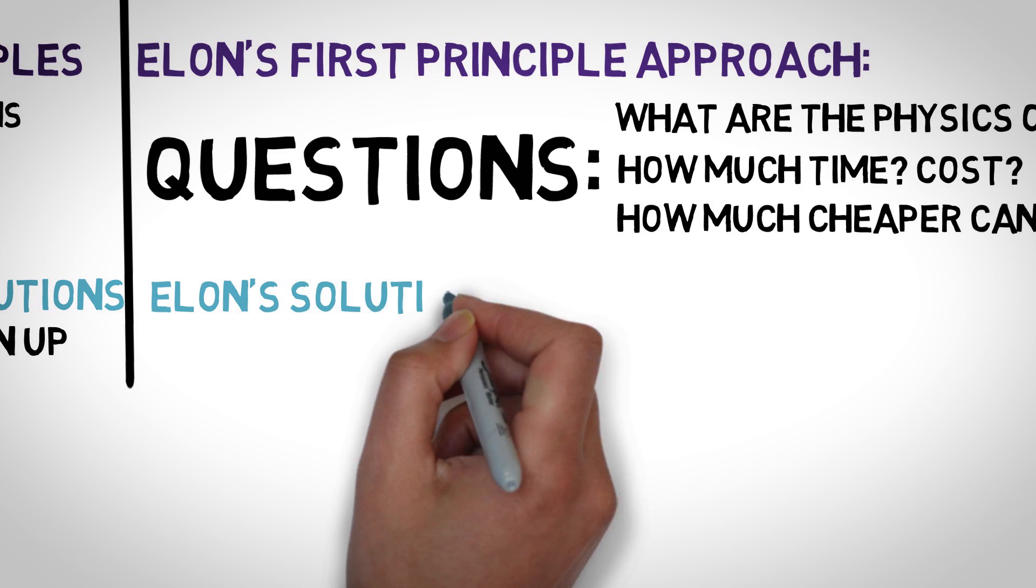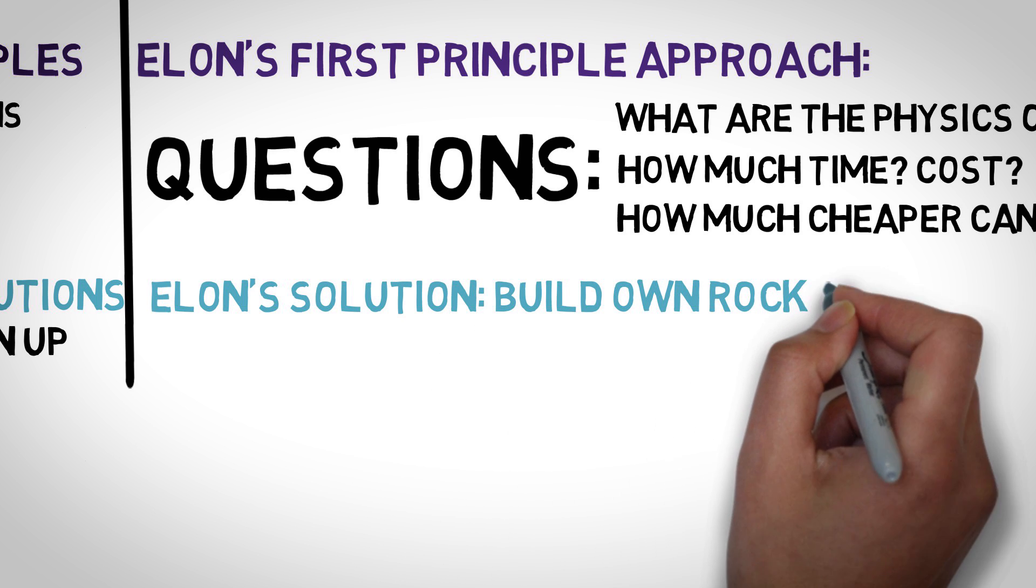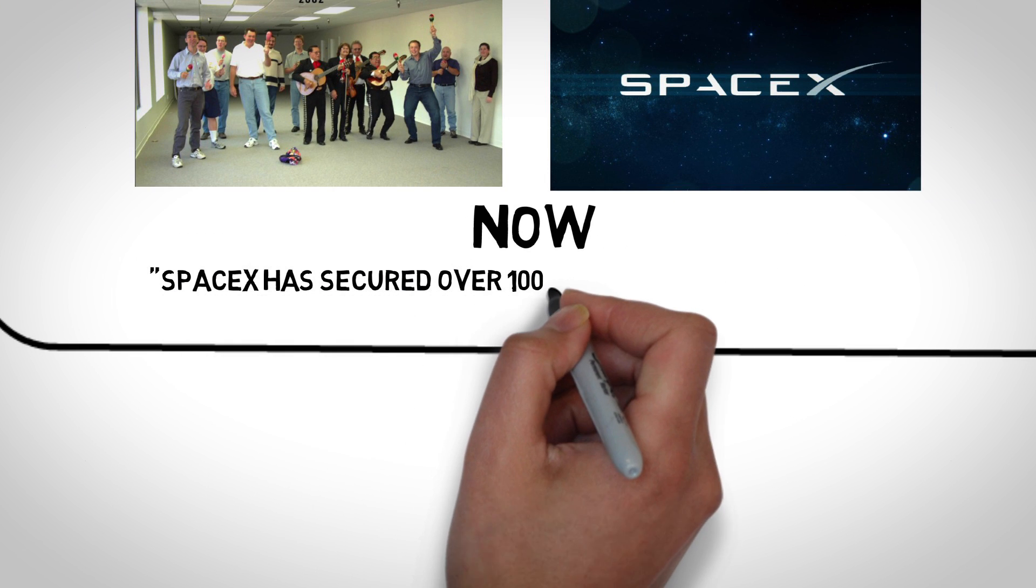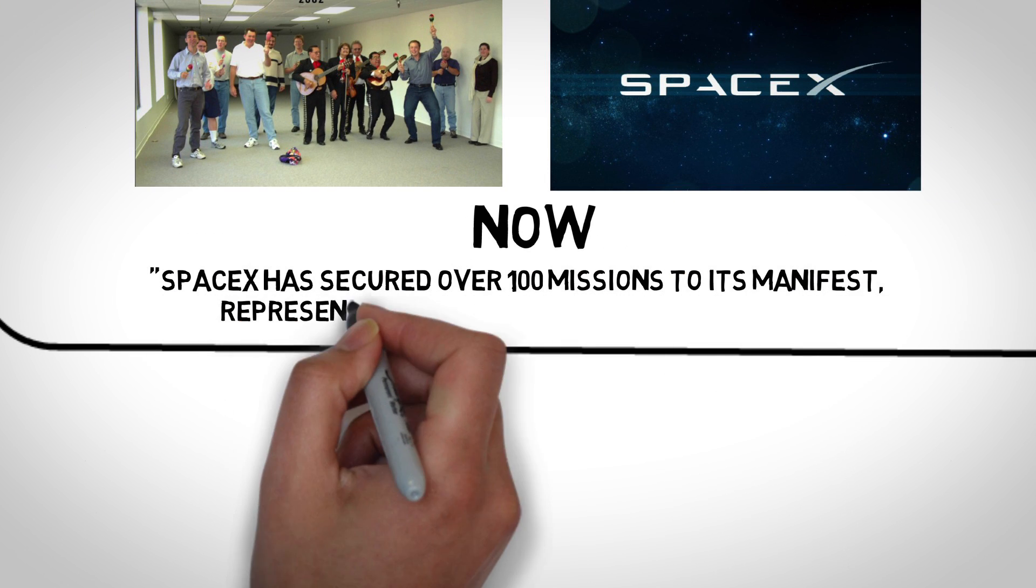Right now, SpaceX has succeeded in revolutionizing rocket technology by creating the first reusable rockets. Currently, its manifest contains more than 100 launches for the future, and this private company has already made historical achievements multiple times.